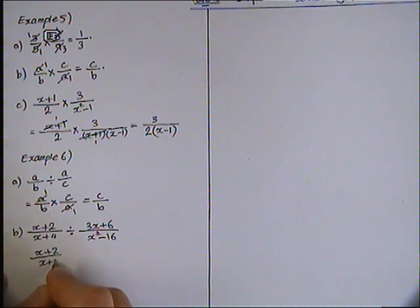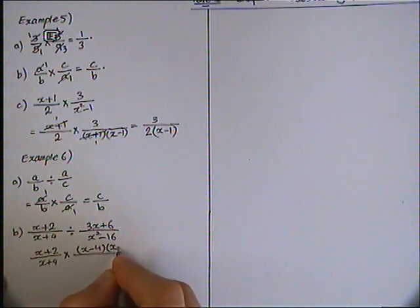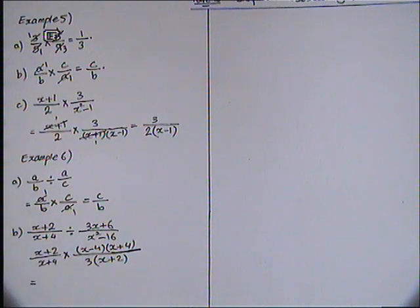Then swap the top and bottom, but in the meantime, while we swap the top and bottom, we can factorize this. So this x squared minus 16 becomes x minus 4 times x plus 4, over - factorize 3 from the numerator - you get x plus 2 in the bracket. Now we can simplify this.